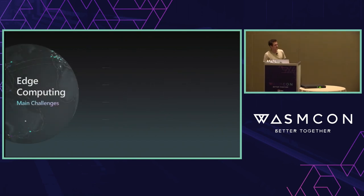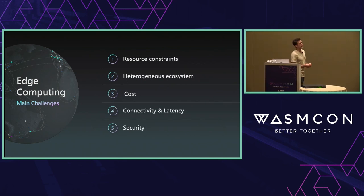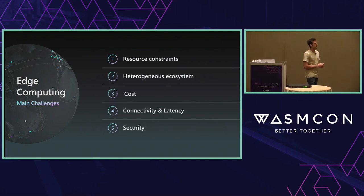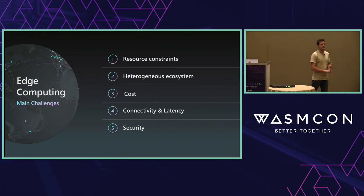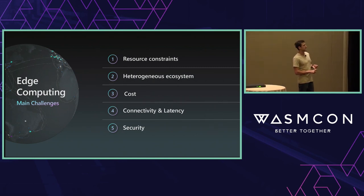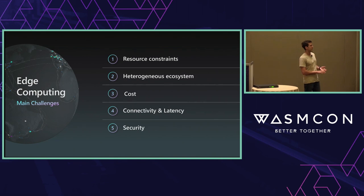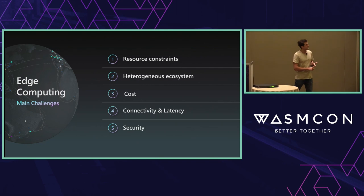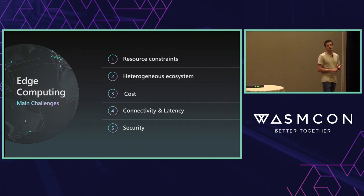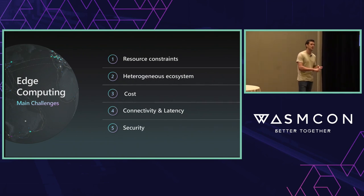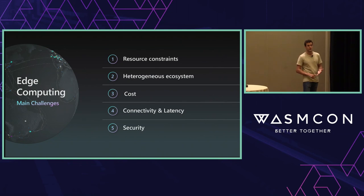What are the challenges in these edge computing scenarios? First: resource constraints. A lot of these small devices don't have a GPU — we're talking about i5, i3, 4GB of RAM, really constrained compared to big on-prem servers. Second: this is a really heterogeneous environment. Customers are using Windows, Linux, ARM32, ARM64, x64, and now RISC-V. That matrix is getting bigger and bigger.